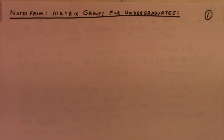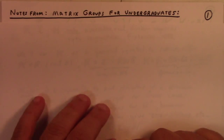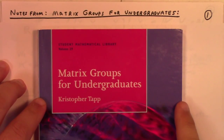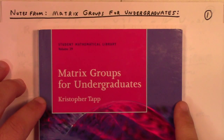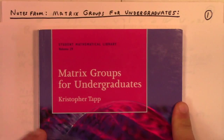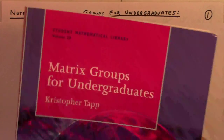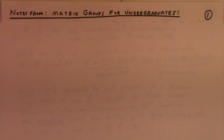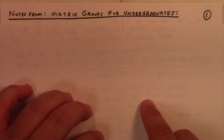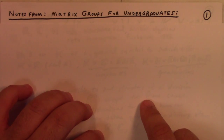I just wanted to give a few brief talks about Matrix Groups for Undergraduates. I'm going to go through some of my notes, which are based on this book, 'Matrix Groups for Undergraduates' by Kristopher Tapp, the Student Mathematical Library, volume 29 of the American Mathematical Society. It's a little book, pretty inexpensive, and I really love the style of this book. You get so much for such a short read — lots of really interesting results about these matrix groups.